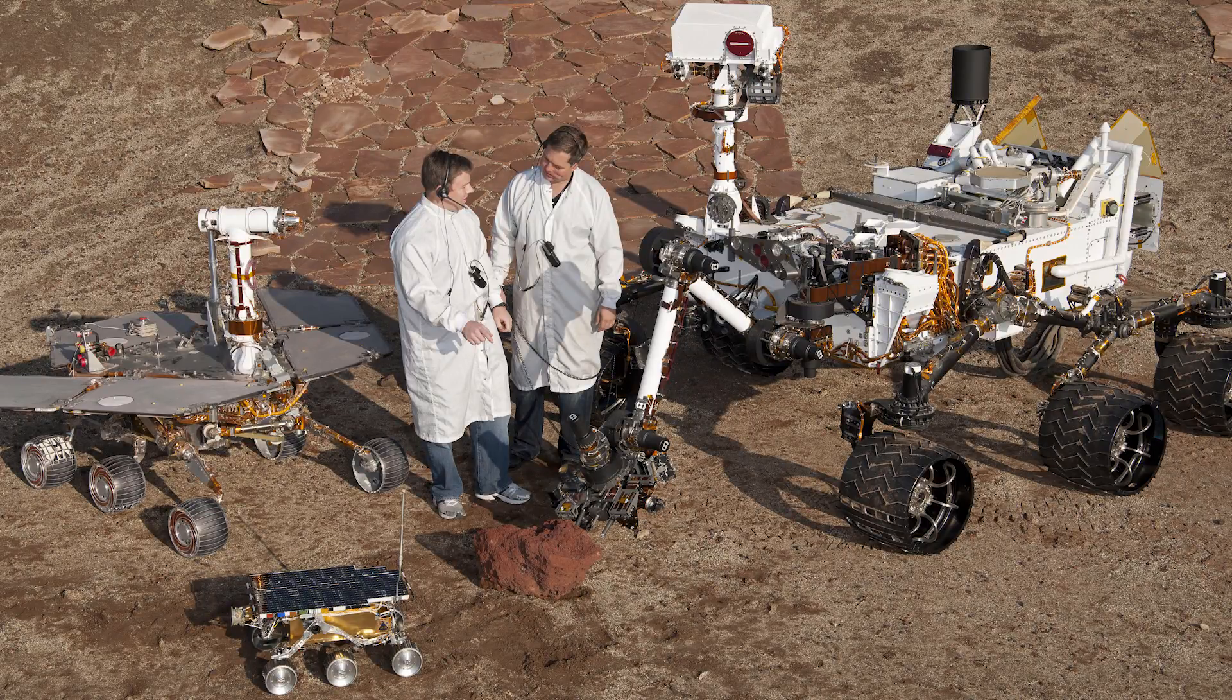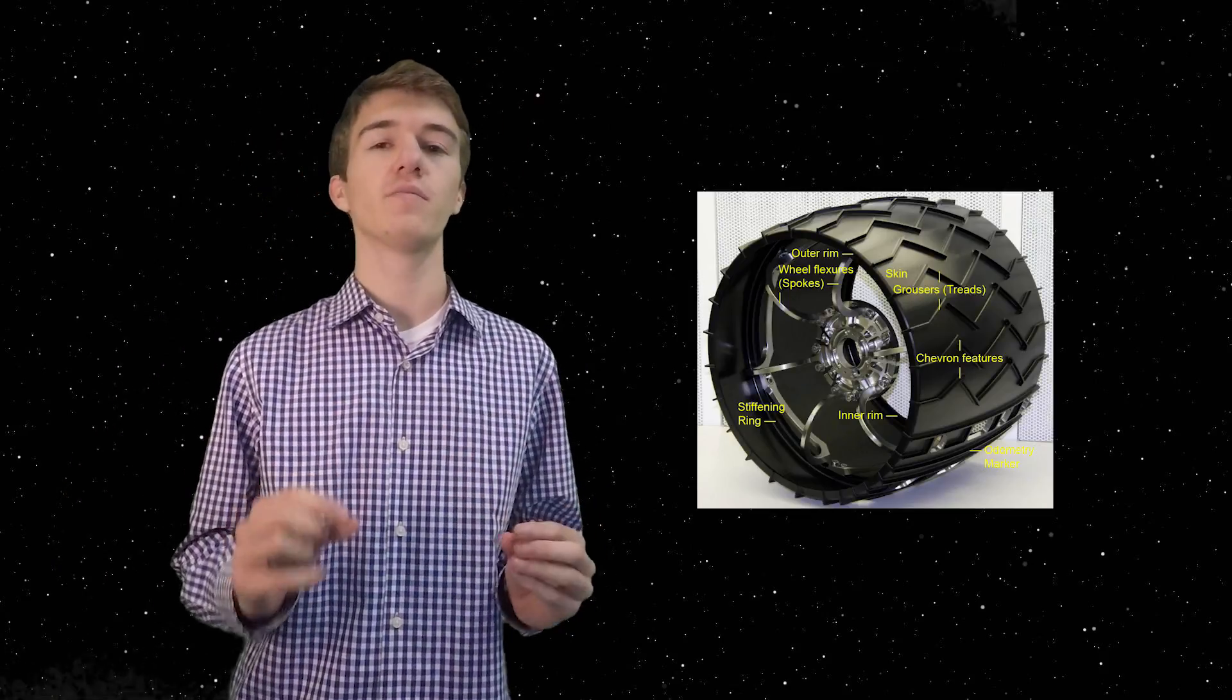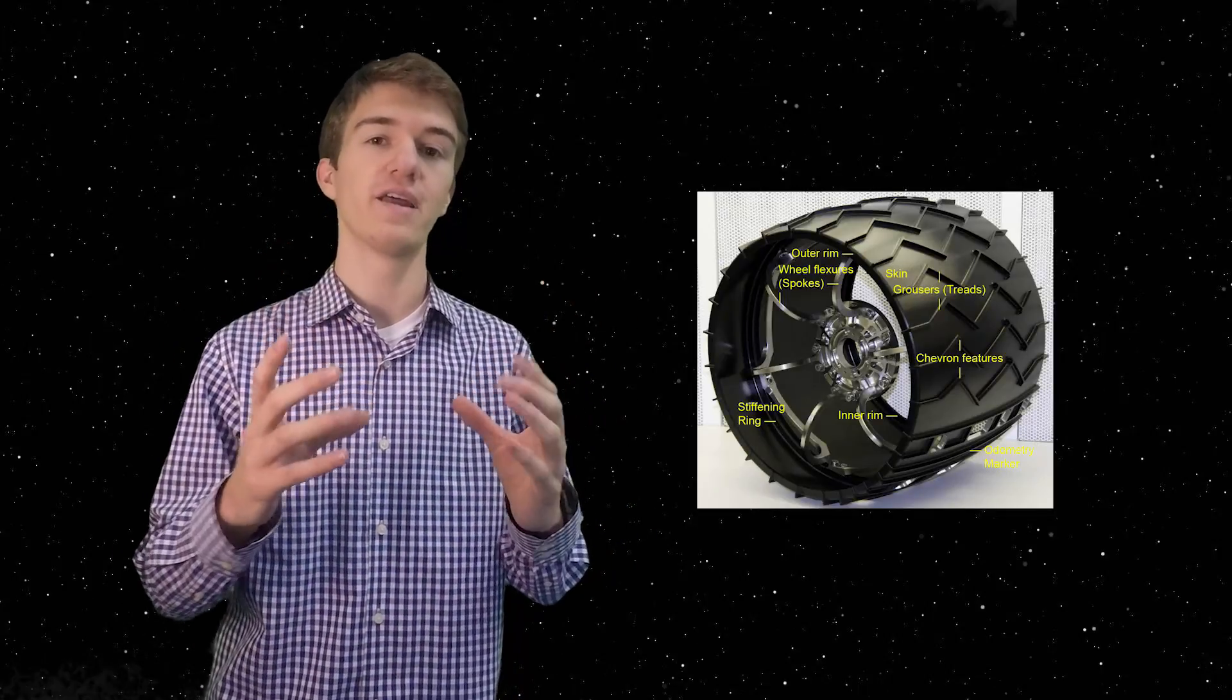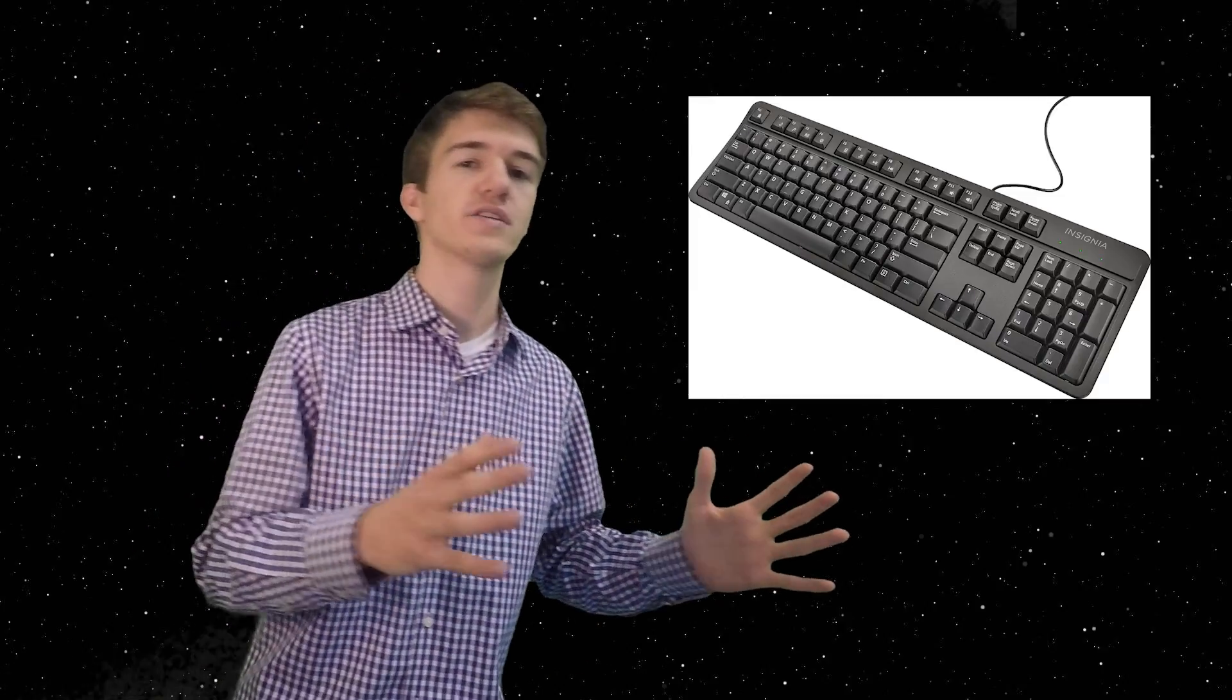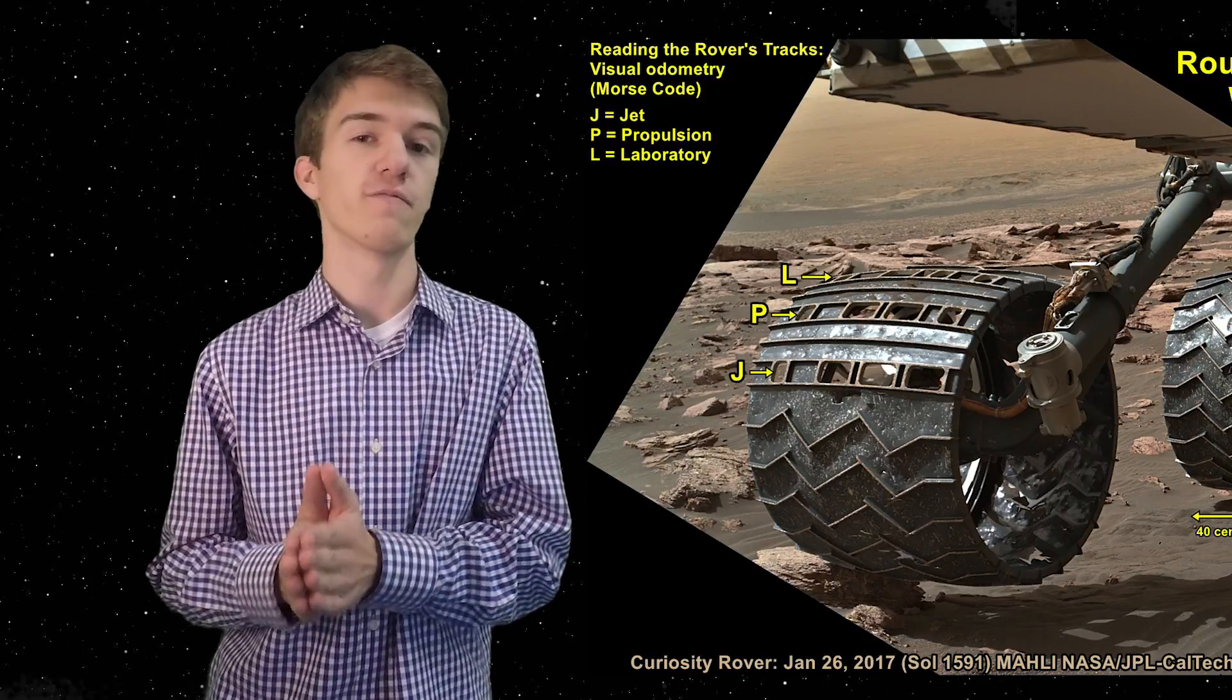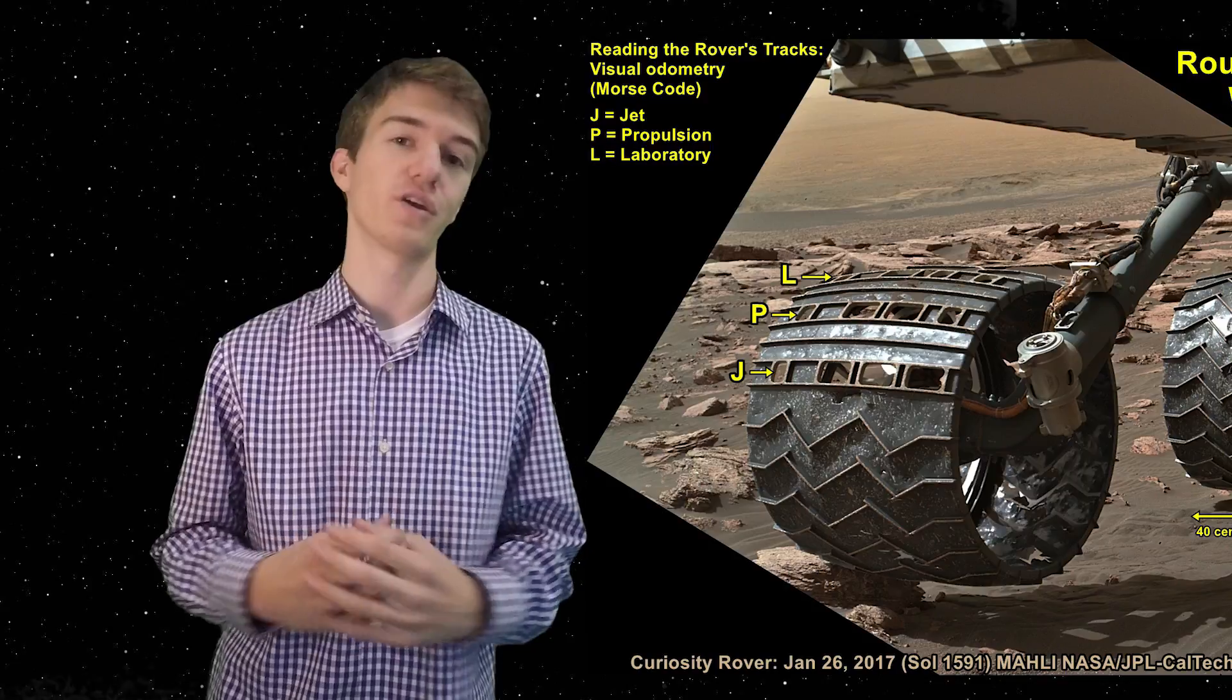Something interesting about Curiosity's wheels is they're designed a little bit different. They have a very thin outer layer with a strong inside, and the tracks on the outside actually spell something in Morse code. When the Curiosity rover roams across the surface of Mars, it leaves a trace of what comes out to be JPL, which is an acronym for Jet Propulsion Laboratory, the place that designed and built the Curiosity rover.